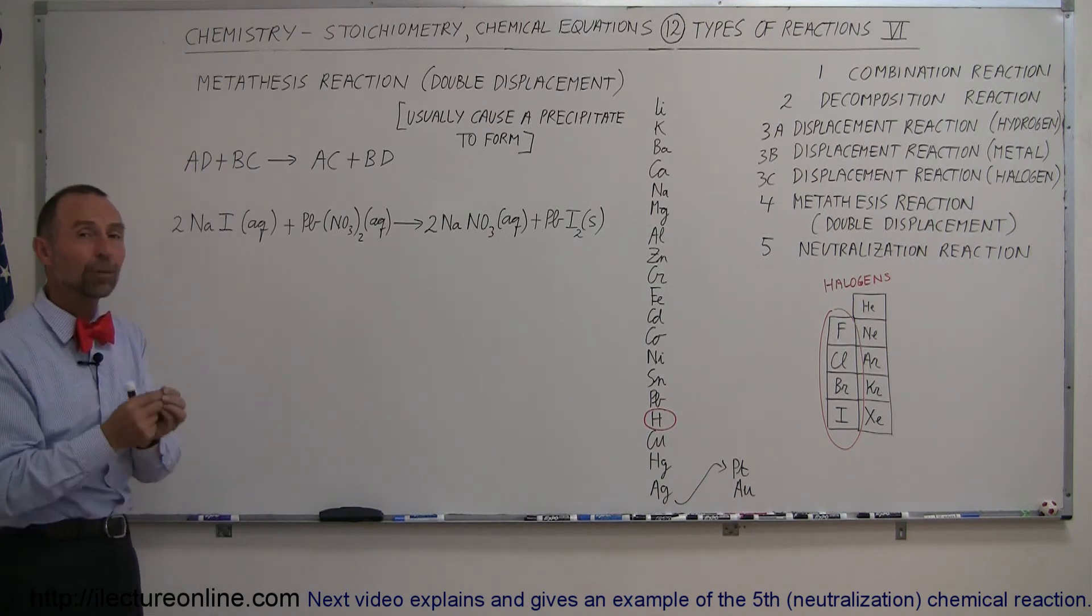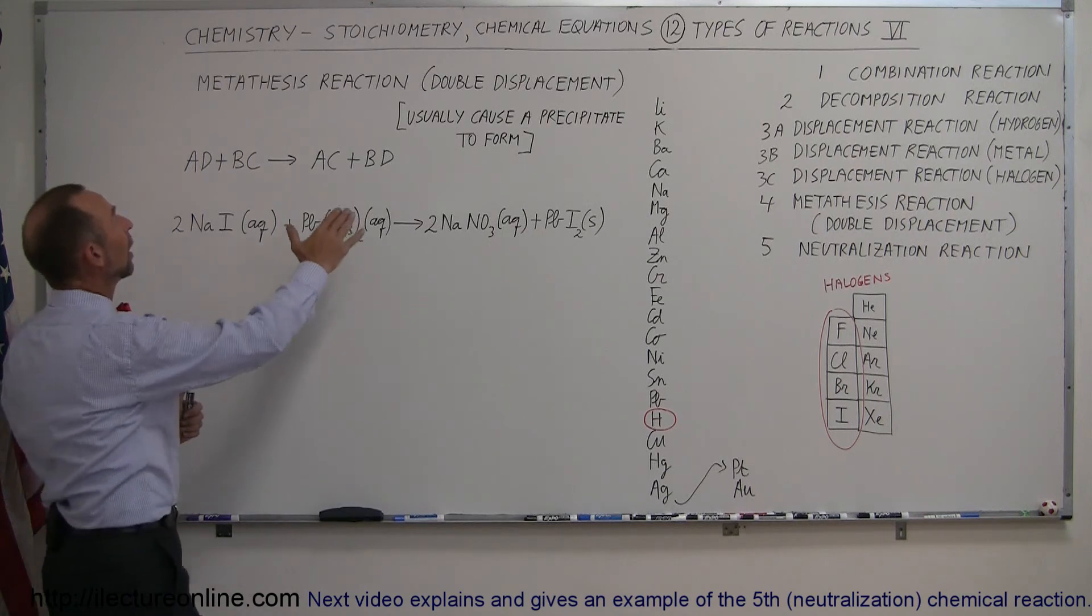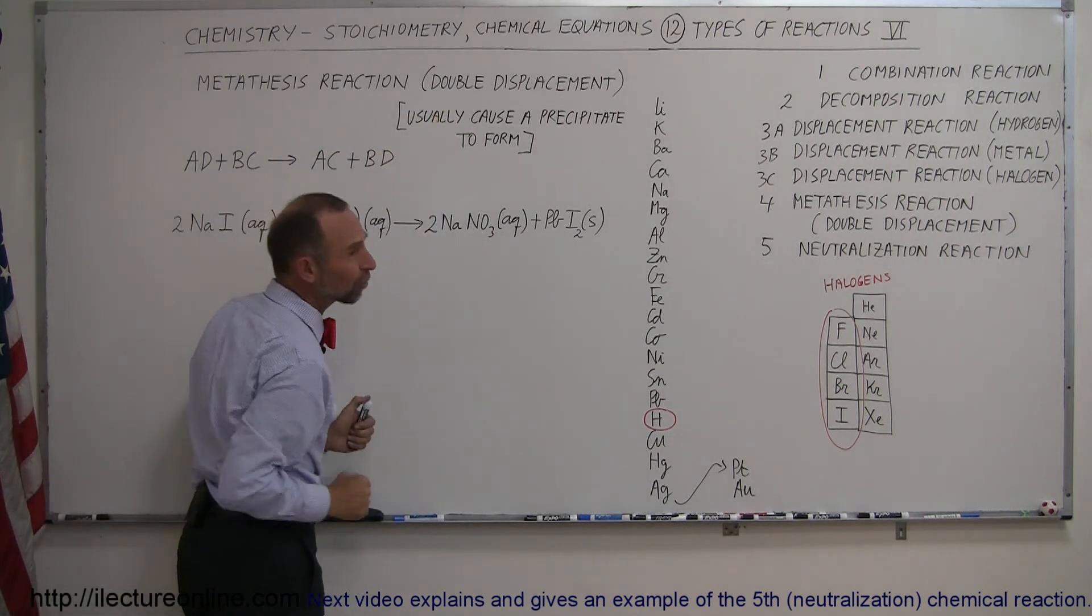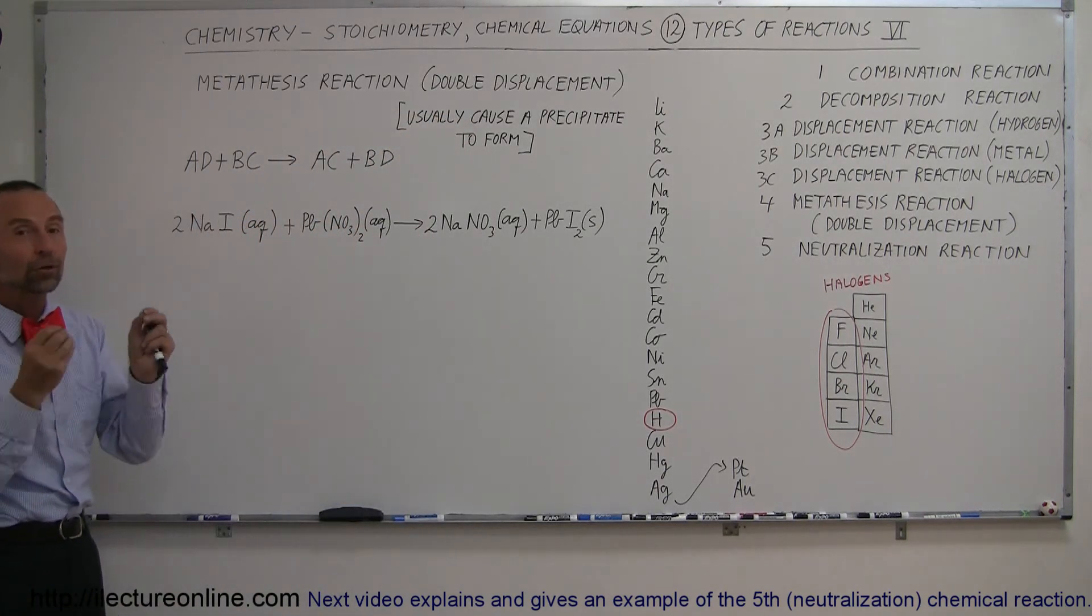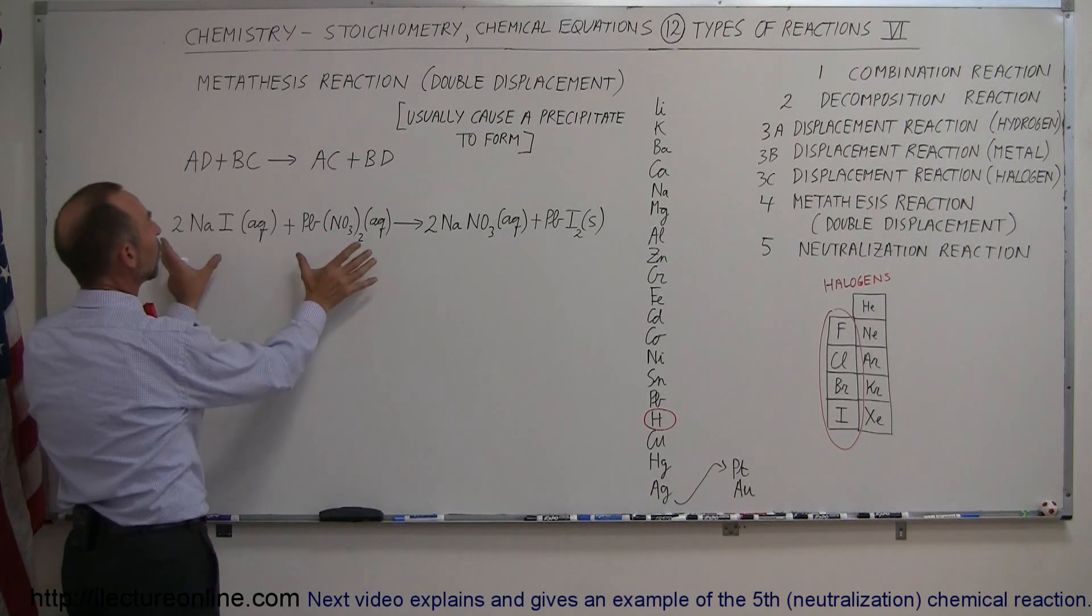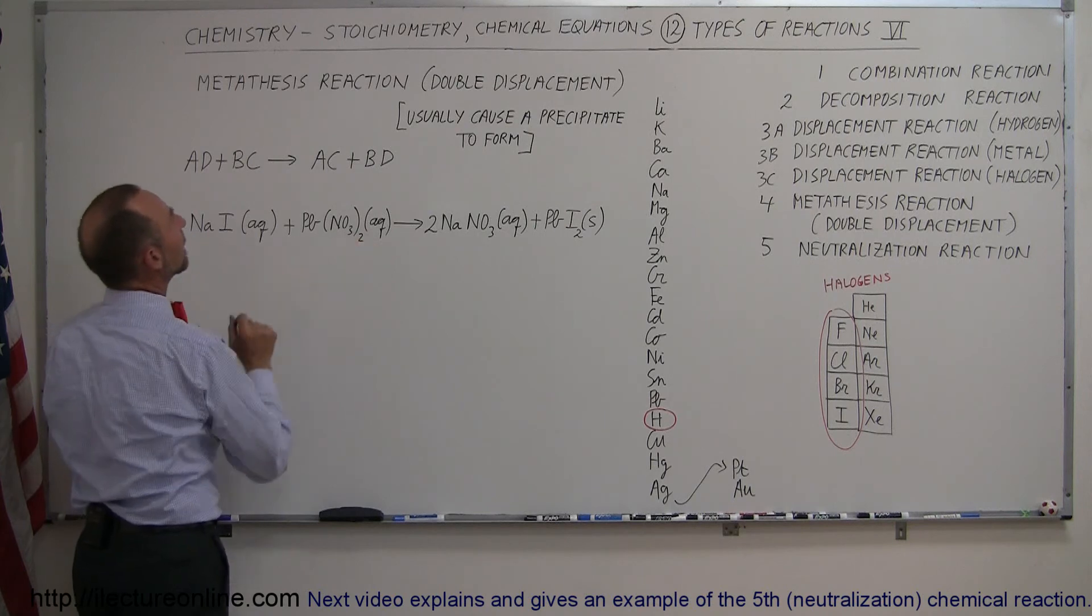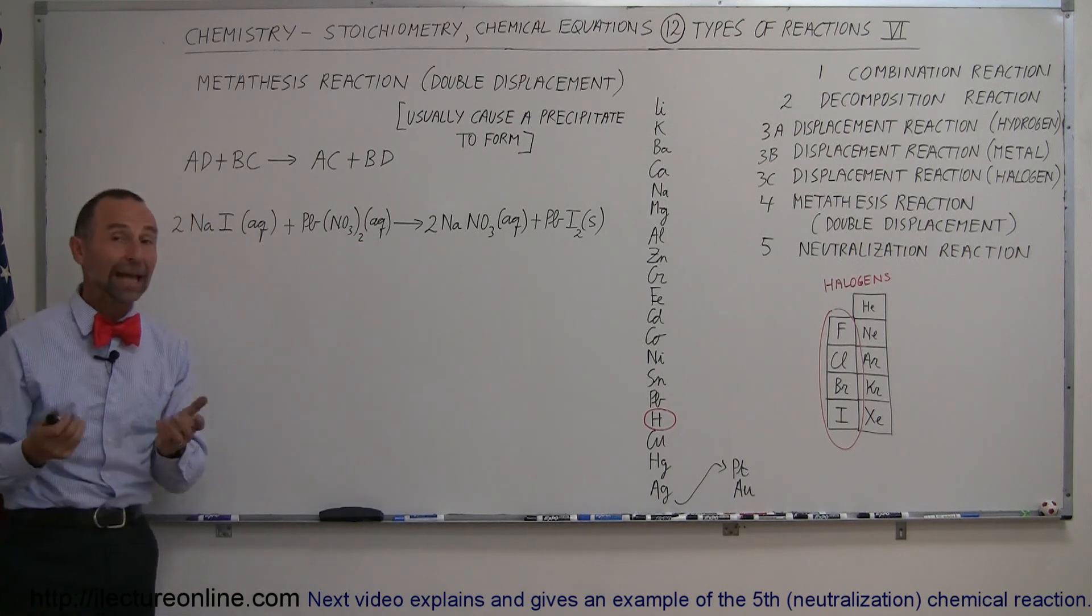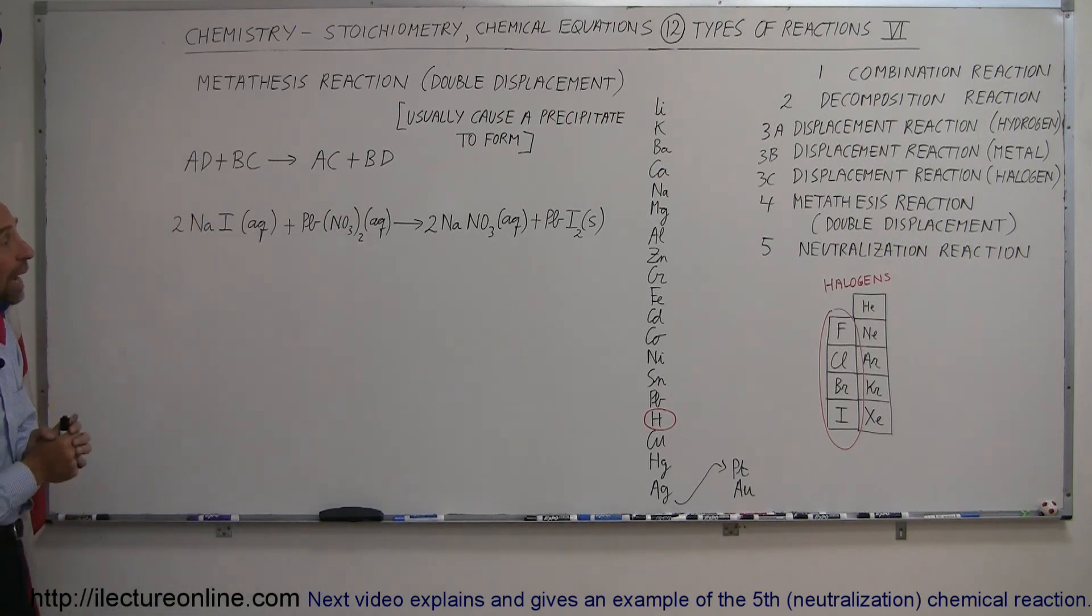two of them come together and form a precipitate. Usually, a metathesis reaction or double displacement reaction is where two of the four ions actually bond together and precipitate out, which they could not have done in their initial solutions. That is known as a double displacement reaction.